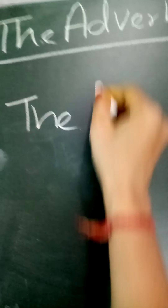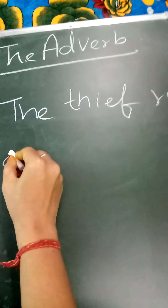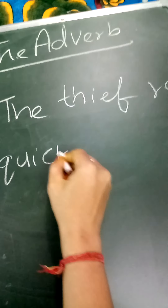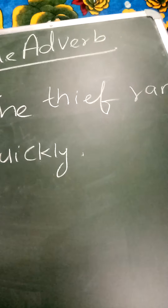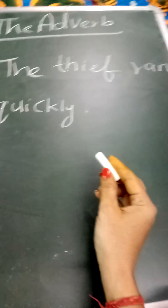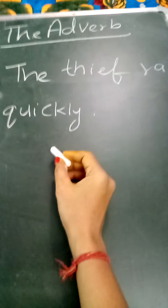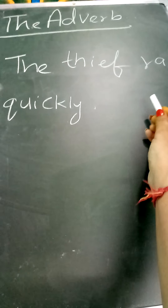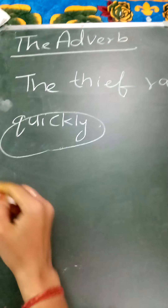The thief ran quickly. So here, how is the thief running? Thief kaise bhaaga? Quickly. Yaha pere 'quickly' jo hai, 'ran' word ko describe kar raha hai — is mein meaning add kar raha hai ki woh kaise bhaaga. Quickly bhaaga. So, quickly kya ho gaya? Adverb.